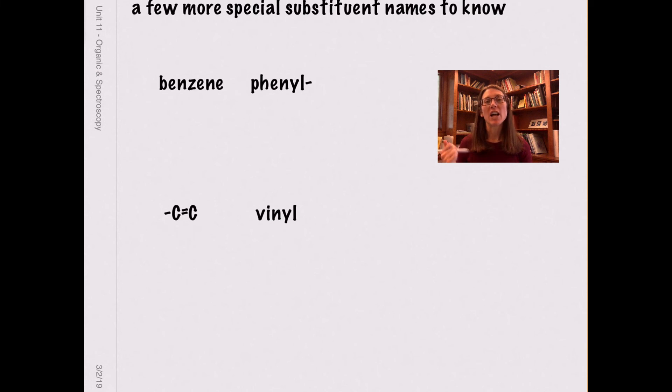Lastly, a couple more key substituents you're going to come across. I already mentioned that benzene as a substituent is a phenyl ring, so this is when it is part of a molecule with a more important functional group, typically containing oxygen. The other common substituent you're going to see is a vinyl substituent. And this is a carbon-carbon double bond attached to a molecule with a more important functional group.